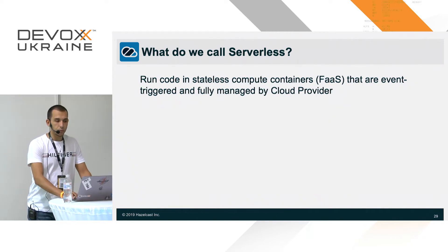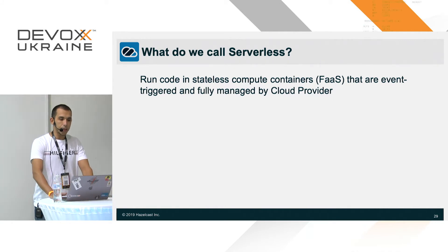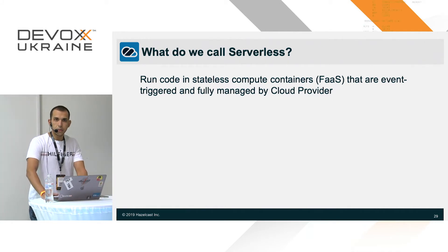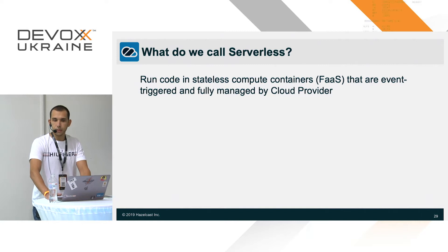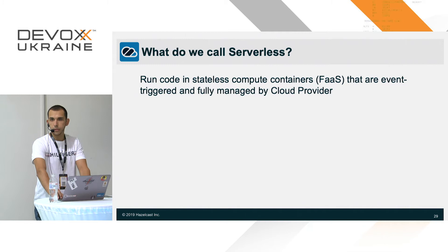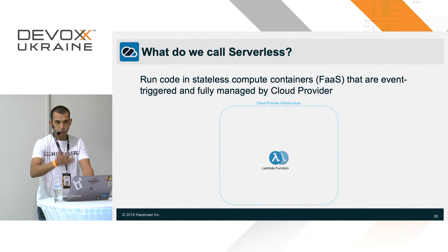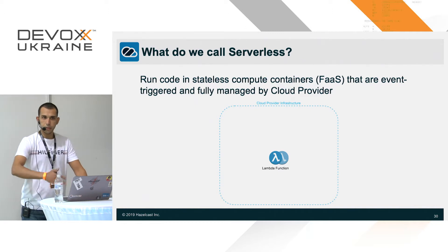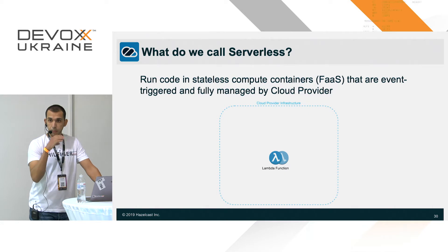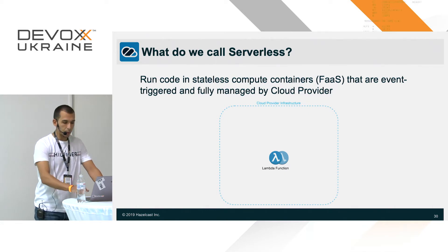Serverless also allows you to run code in stateless compute containers called Lambda functions — this is Function as a Service, or FaaS. Those Lambda functions are event-triggered and fully managed by the cloud provider. You program a Lambda function in some language — Java, Node.js, whatever — and implement a callback which handles a specific event.